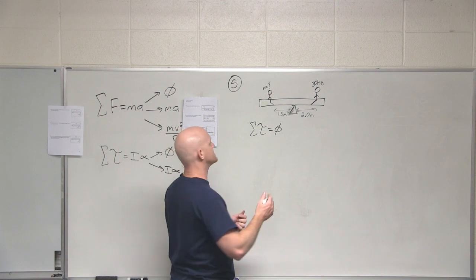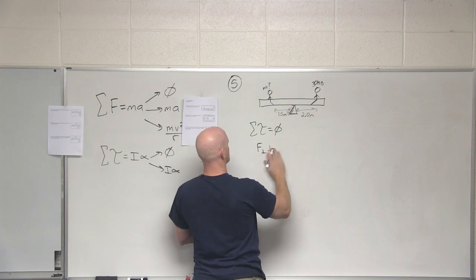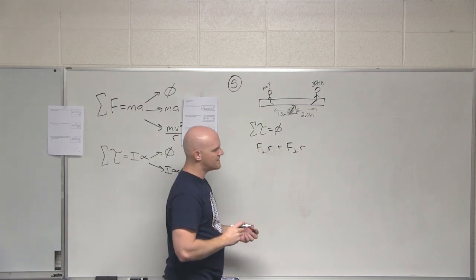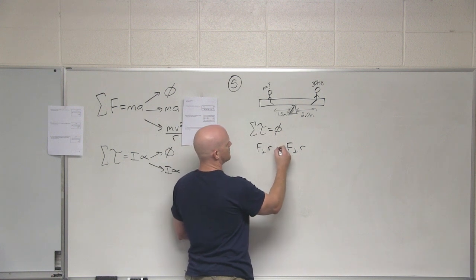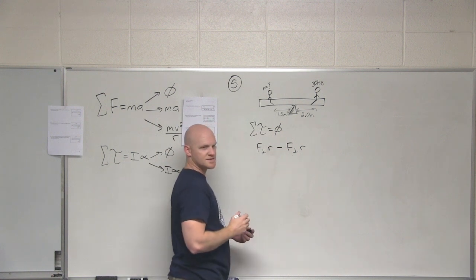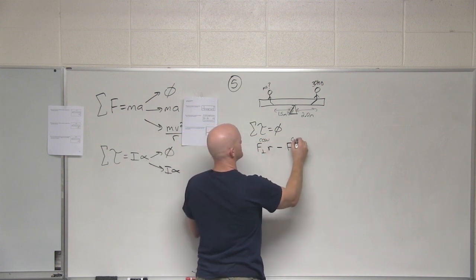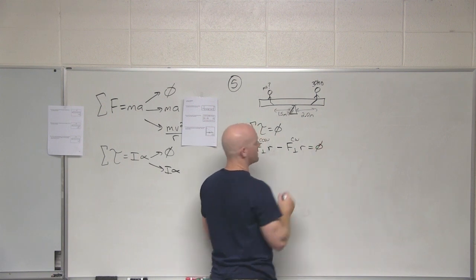So in this case, we could say force times lever arm—I want to make that an L so badly—plus force times lever arm. I'm going to replace this plus with a minus, because one of them is causing rotation clockwise instead of counterclockwise. So I'm making this one counterclockwise and this one clockwise. These are going to add up to zero.